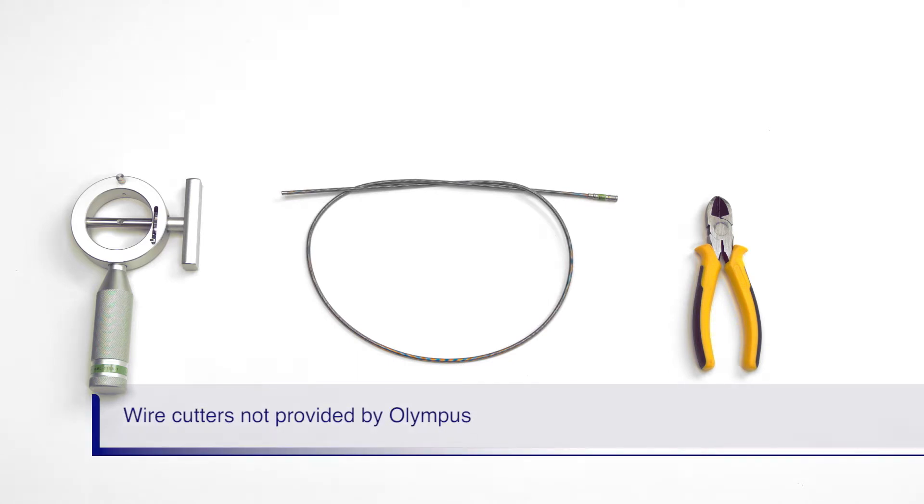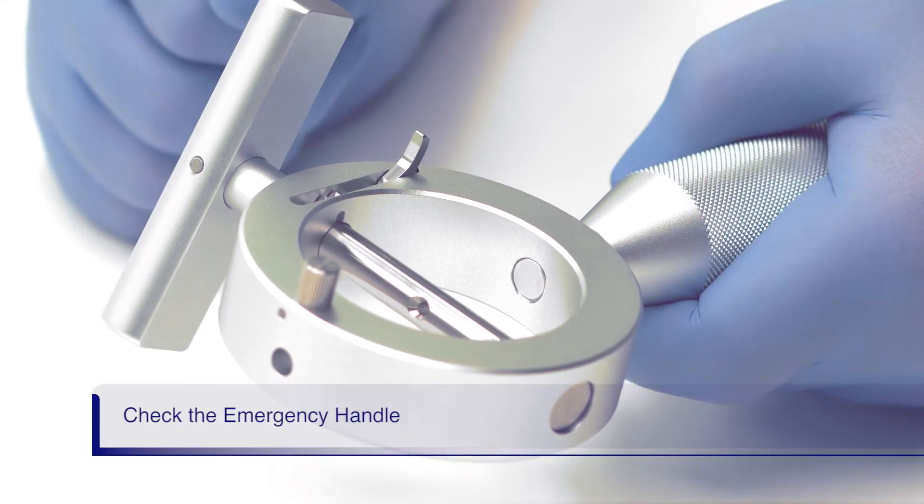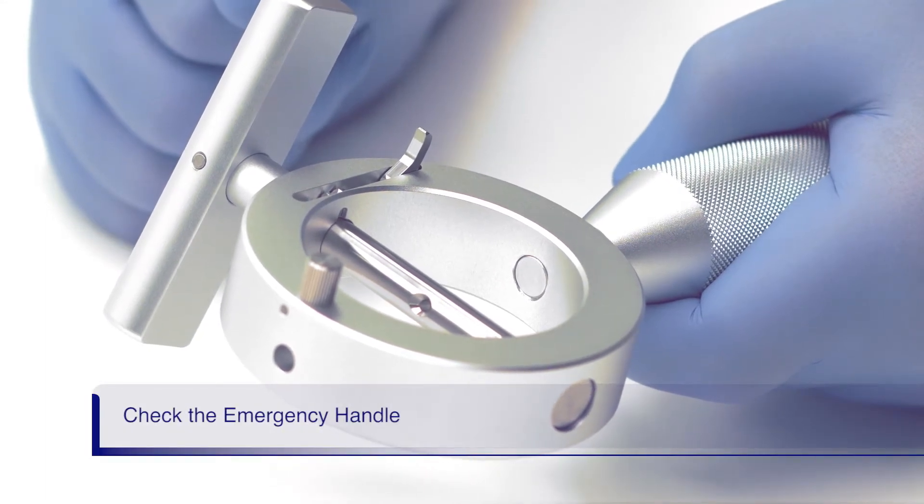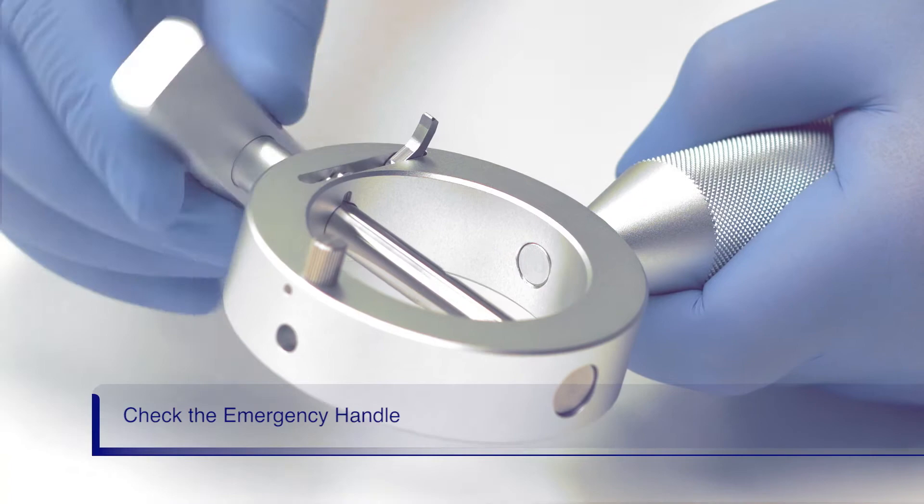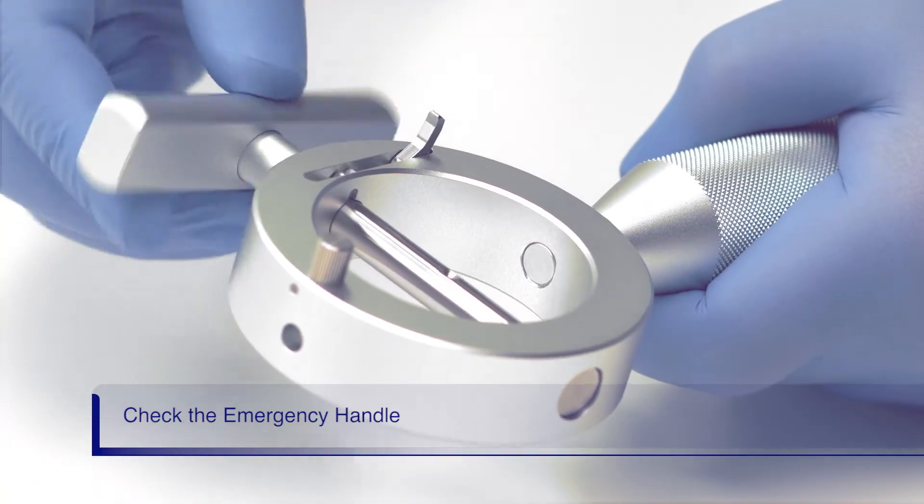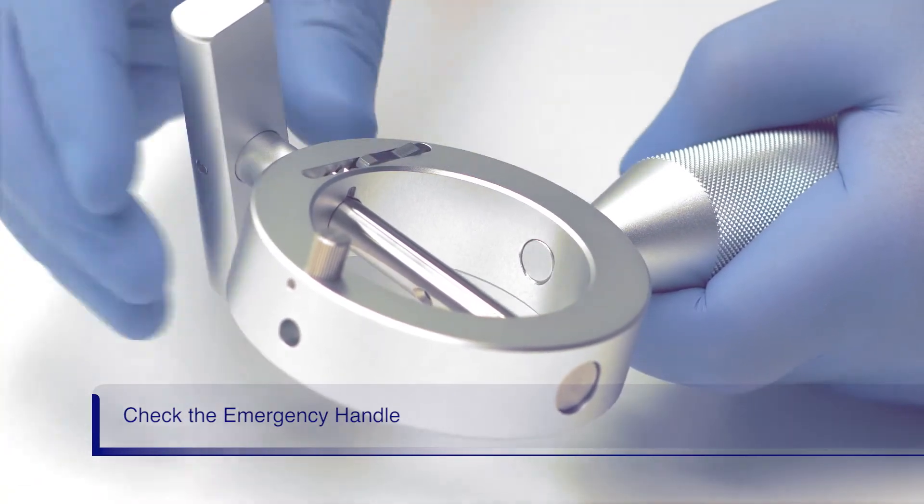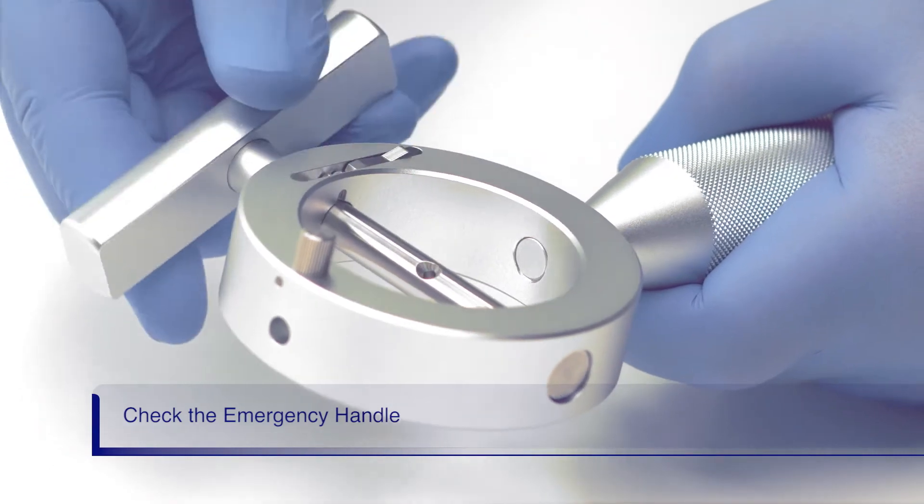Before using the emergency lithotriptor handle, ensure that the rotatable bar can freely turn and confirm the ratchet lock works by engaging and disengaging it at the handlebar.